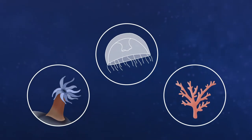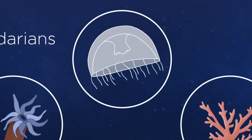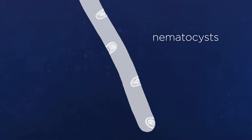Jellyfish, anemones, and corals are animals called cnidarians, which are unique for being armed with stinging harpoon capsules called nematocysts.